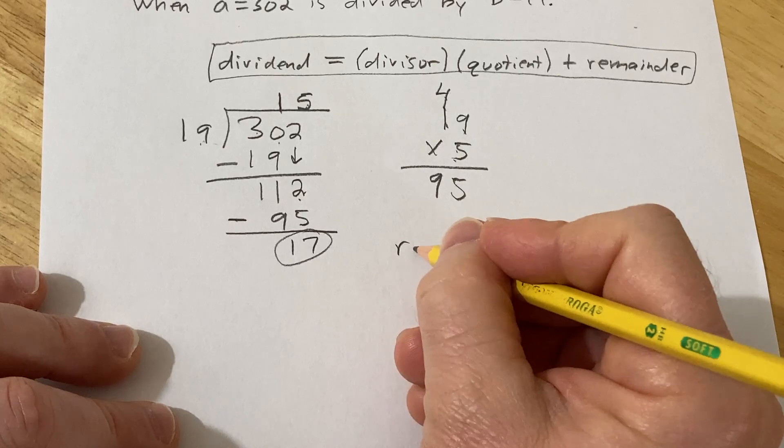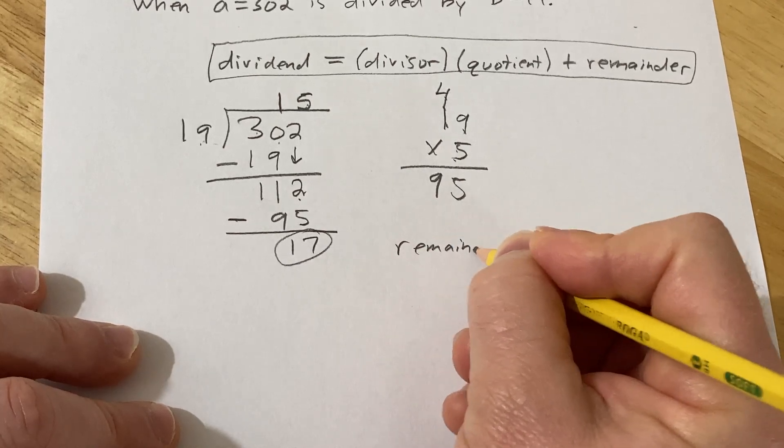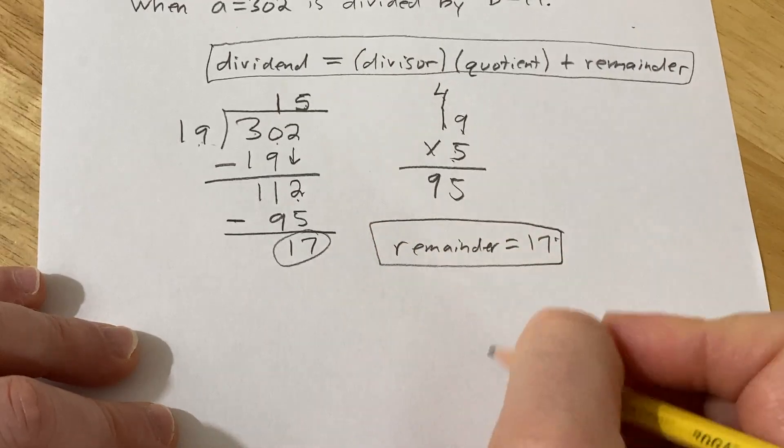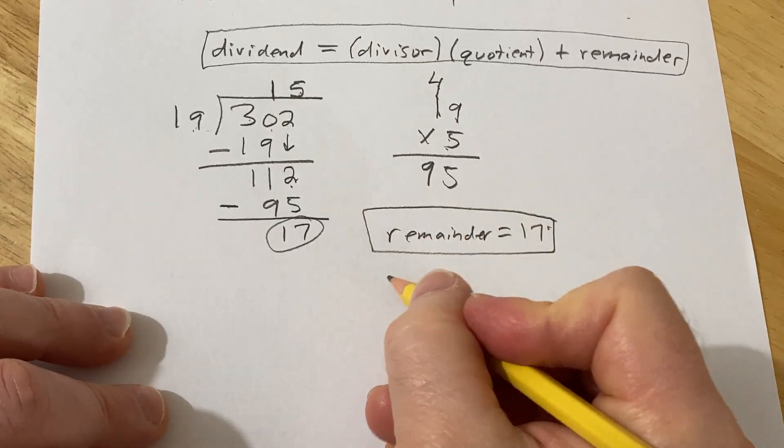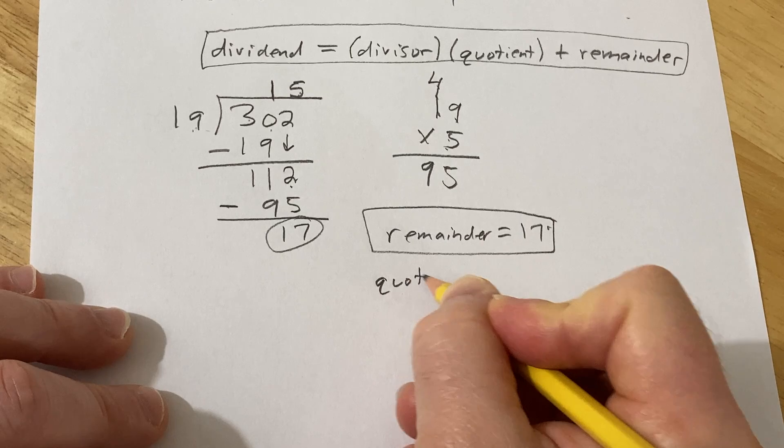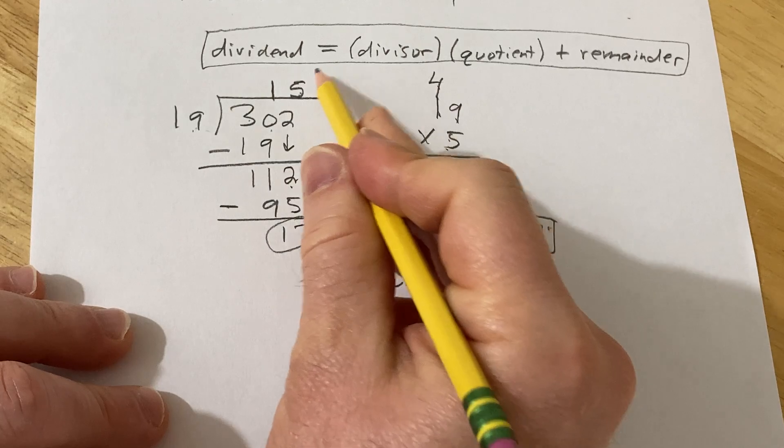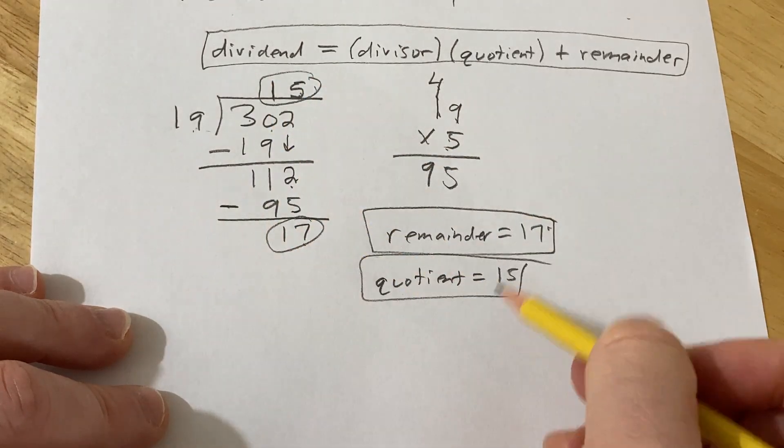In this case, the remainder is 17. Your quotient is 15. That's this here - this is the quotient, this is the remainder.